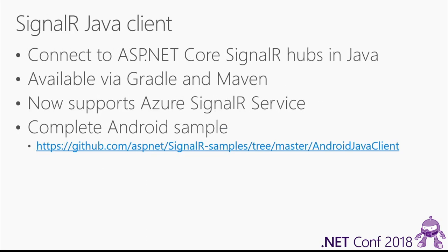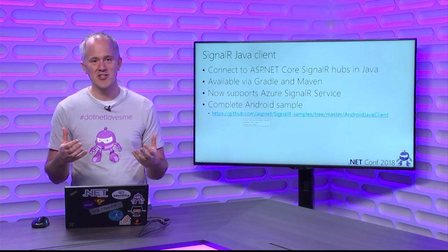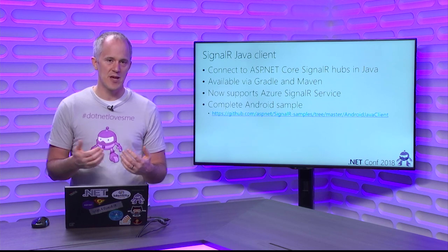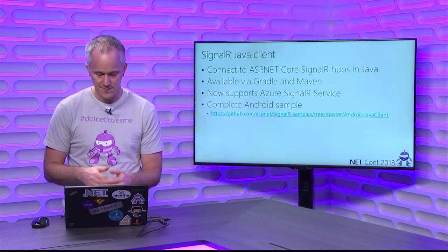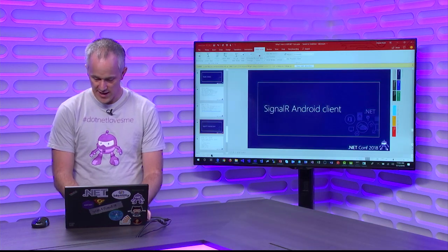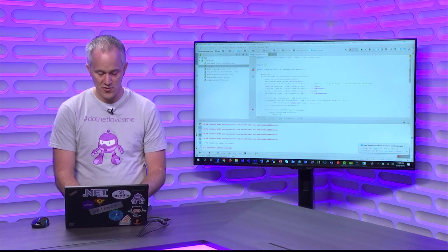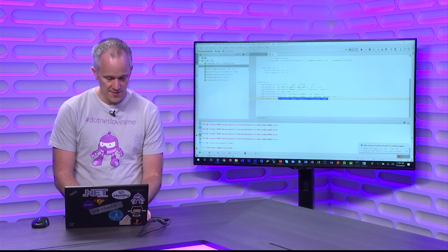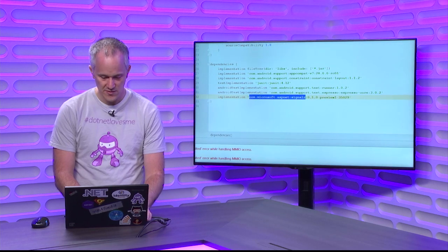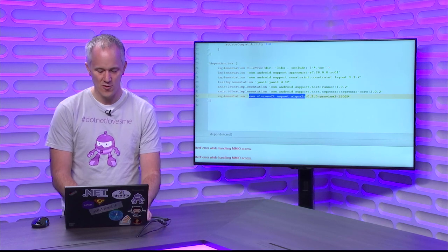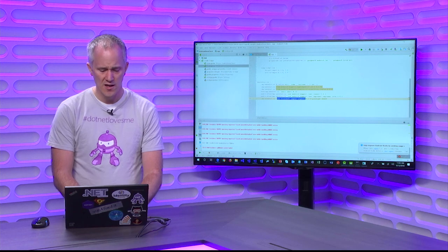Finally, the new ASP.NET Core SignalR Java Client library allows you to connect to SignalR Hubs from Java applications. It's available for Gradle and Maven, and starting in Preview 2 also supports the Azure SignalR Service — so you can write an Android application in Java using SignalR for real-time capabilities at scale. There's a nice Android sample using the Java Client. In the build.gradle file, you add com.microsoft.aspnet:signalr as a dependency — this shows the preview 1 version which needs to be updated to preview 2, but the code is essentially the same.